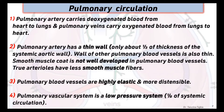In pulmonary circulation there are some peculiarities. First, pulmonary arteries carry blood from heart to lung and pulmonary veins carry oxygenated blood from lungs to heart. Second, the pulmonary artery has a thin wall, which is about one third of the thickness of the systemic aortic wall. Walls of other pulmonary blood vessels are also thin, and smooth muscle is not well developed; true arterioles have less smooth muscle fibers. Third, pulmonary blood vessels are highly elastic and more distensible.